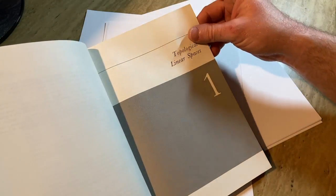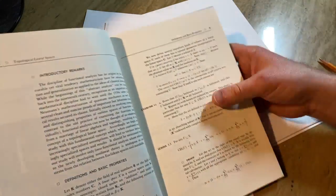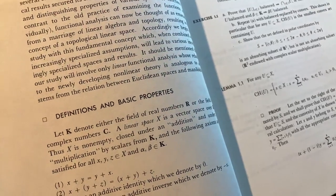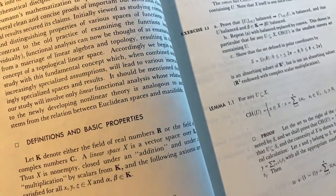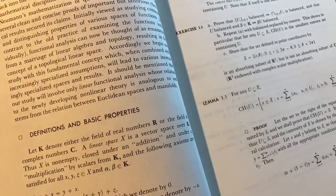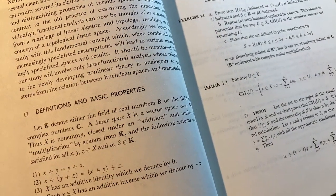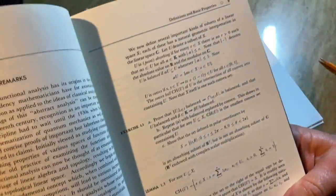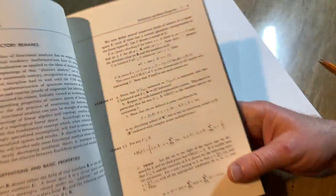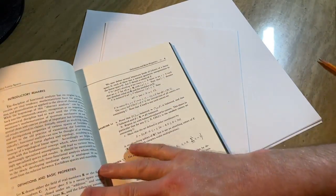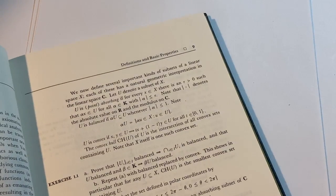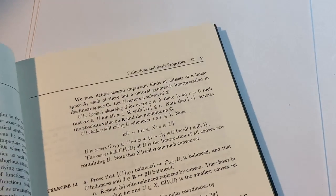Topological linear spaces, chapter one. Okay. What's this? Definitions and basic properties. Let K denote either the field of real numbers R or the field of complex numbers C. A linear space X is a vector space over K. Okay. What's this? This looks even more complicated. Let's zoom in and let's look at this. This looks really, really different. I don't know if you've ever seen anything like this. You probably haven't seen this type of math.